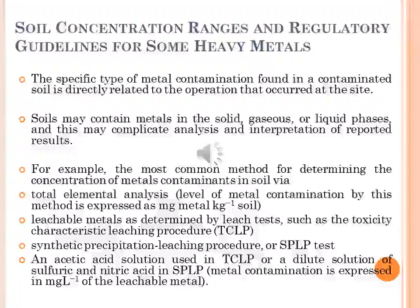The specific type of metal contamination found in contaminated soil is directly related to operations that occurred at the site. The range of contamination concentration and the physical and chemical forms of contaminants will depend on activities and disposal patterns for contaminated waste on the site. Soil may contain metals in solid, gaseous or liquid phases, which may complicate analysis and interpretation of reported results. The most common method for determining the concentration of metal contaminants in soil is total elemental analysis, expressed as milligram metal per kilogram soil.